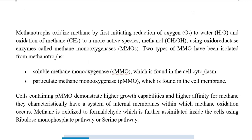Methanotrophs oxidize methane by first initiating reduction of oxygen to water and subsequent oxidation of methane to methanol. This is facilitated by oxidoreductase enzymes such as methane monooxygenases. Two types of methane monooxygenase have been discovered: a soluble methane monooxygenase found in the cell cytoplasm, and a particulate methane monooxygenase attached to the cell membrane.